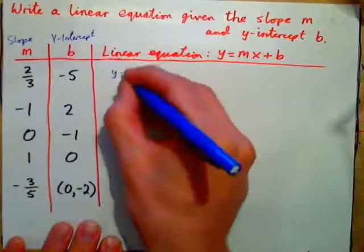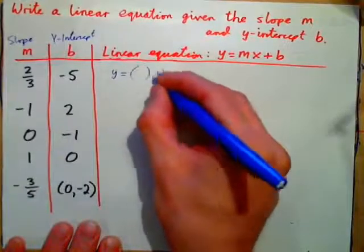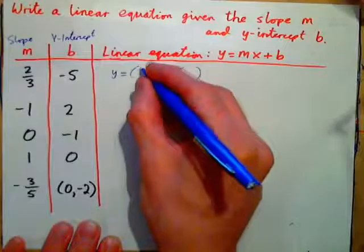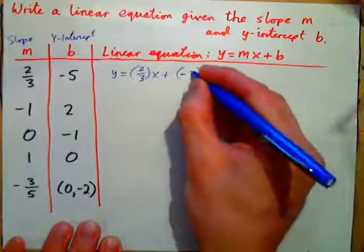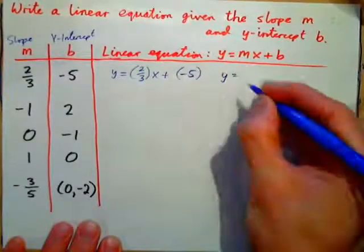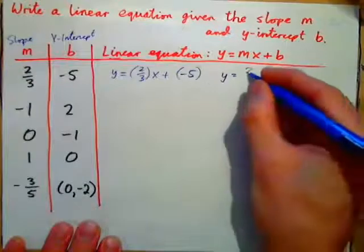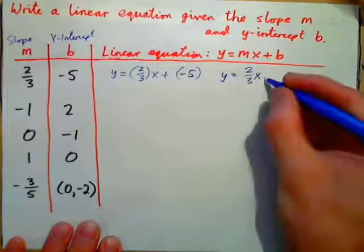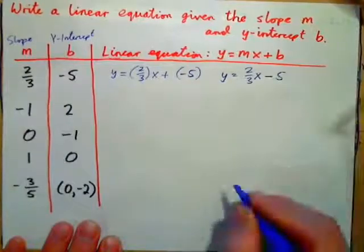If we're given these, we can just write y equals the slope times x plus the y-intercept. So in this case, the slope is 2/3, the y-intercept is negative 5. We can simplify that to be 2/3 times x plus negative 5. Plus negative is the same as subtract, so 2/3x minus 5.